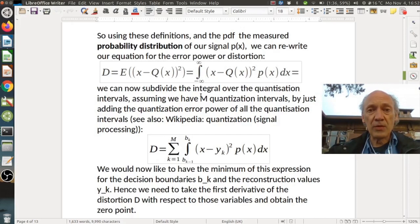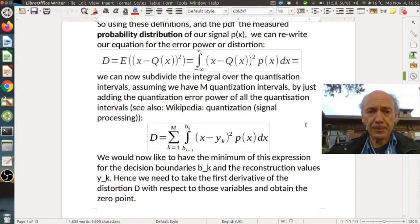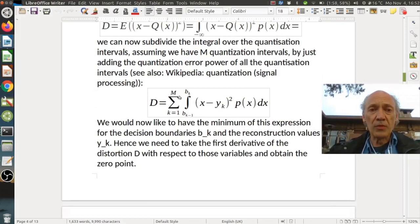We can now subdivide the integral over the quantization intervals, assuming we have m quantization intervals, by just adding the quantization error power of all the quantization intervals. So basically we take this integral and subdivide it into the corresponding quantization intervals. You can also see more about it in the Wikipedia page on quantization. So then this integral turns into the sum over smaller integrals. Now the integrals are just over one quantization interval each. But here the argument is still the same. So we would now like to have the minimum of this expression for the decision boundaries b_k and the reconstruction values y_k.